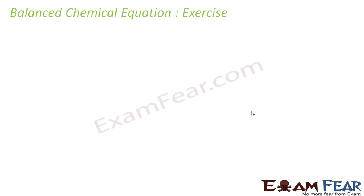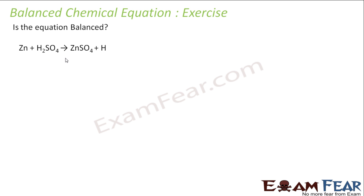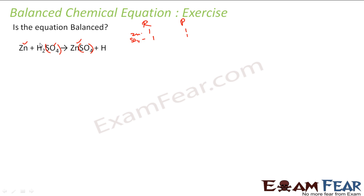Any equation has to be balanced. Let's do some exercises. Take: Zn + H2SO4 → ZnSO4 + H. Is it balanced? In the reactant: zinc is 1; in the product: zinc is 1 — balanced. Sulfate SO4: reactant is 1, product is 1 — balanced. Hydrogen: reactant has 2, product has 1 — not balanced. To make it balanced, you have to write H2 in the product.